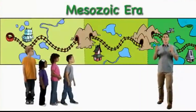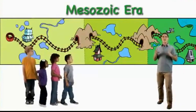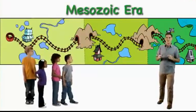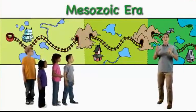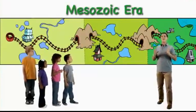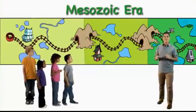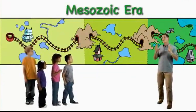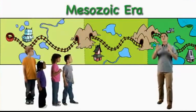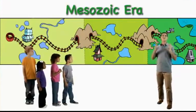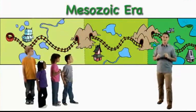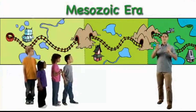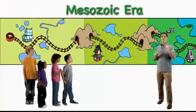Hi there, I'm Dr. Scott, the paleontologist. The Mesozoic era was the age of dinosaurs, and it lasted more than 150 million years. We divide the Mesozoic into three parts called time periods, and each time period has a name.